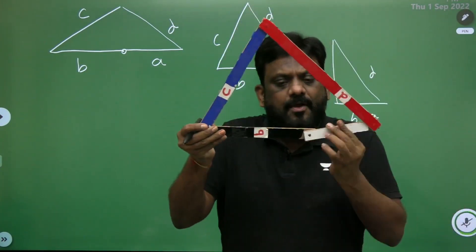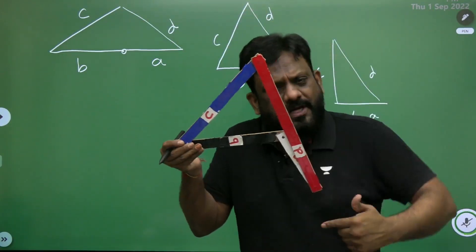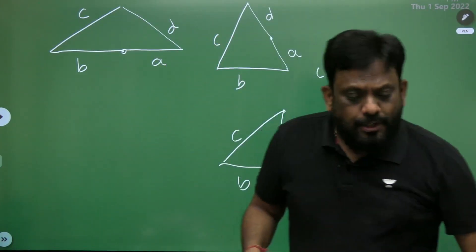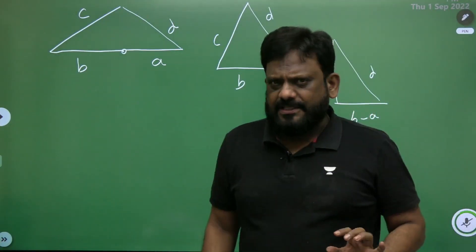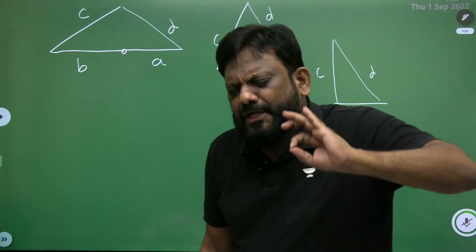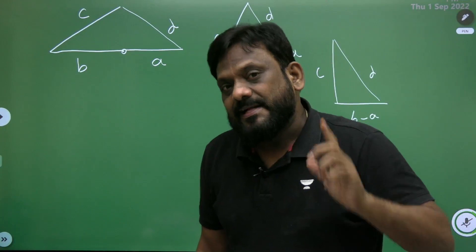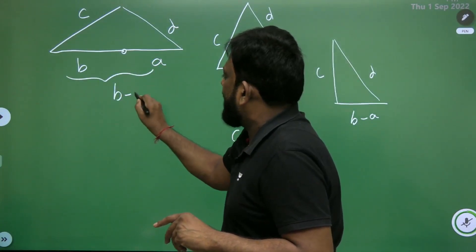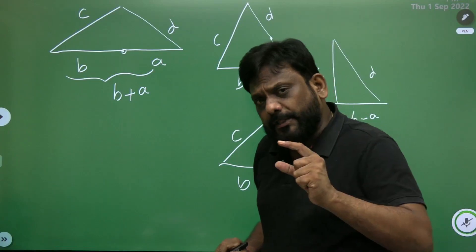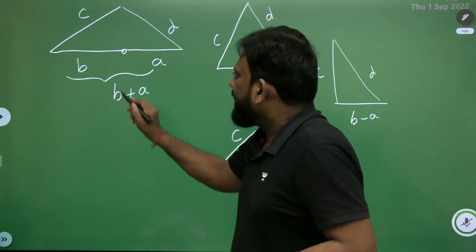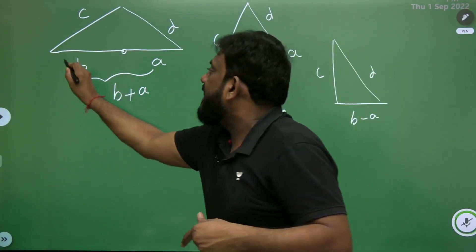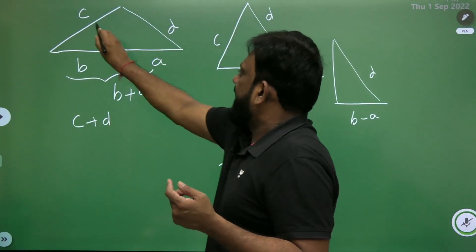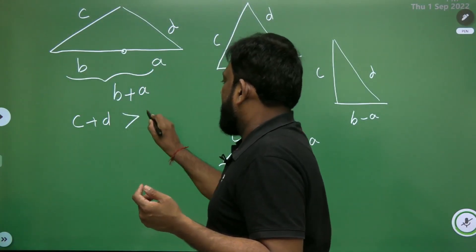So when the white link is rotating completely, I found four triangles during its motion. Now recall the simple rule of triangles from ninth and tenth class: the sum of any two sides is always greater than the remaining side. For example, from the first triangle, C plus D should be greater than B plus A.